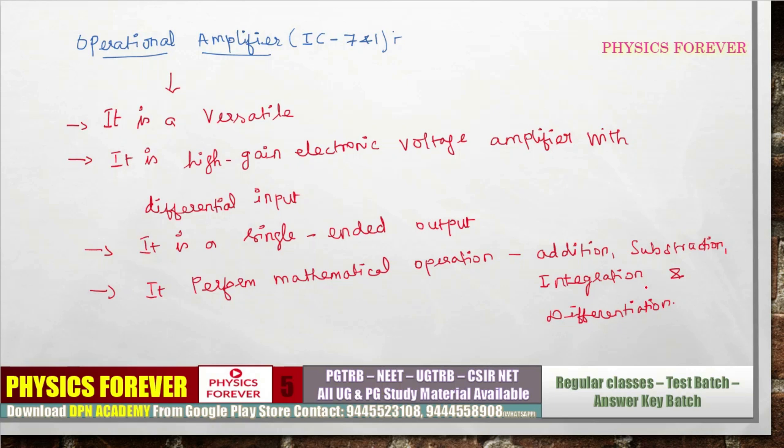In this topic we have to focus on four MCQ points. The operational amplifier is versatile; it is a high voltage gain amplifier that takes differential input — V1 and V2 — and gives a single output. Using the op-amp, we can perform mathematical operations like addition, subtraction, integration, and differentiation.